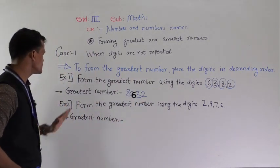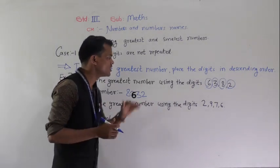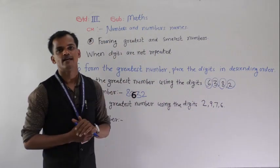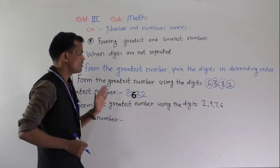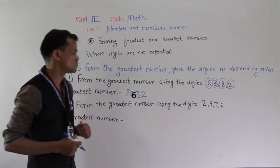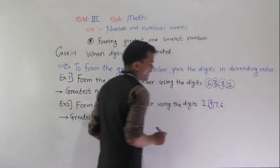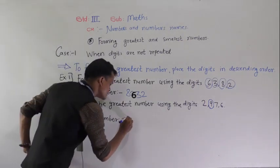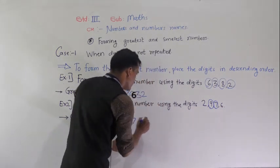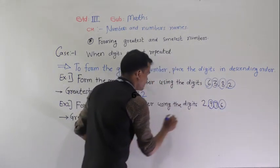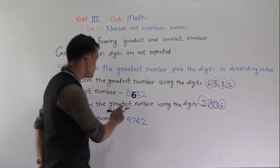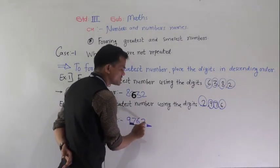Next example: form the greatest number using the digits 2, 9, 7 and 6, 5. To form the greatest number, place the given digits into descending order — big to small order. Which is the greatest digit here? 9. So write 9 first, then 7, then 6, then 2. This is the greatest number formed — read this number: 9,762.